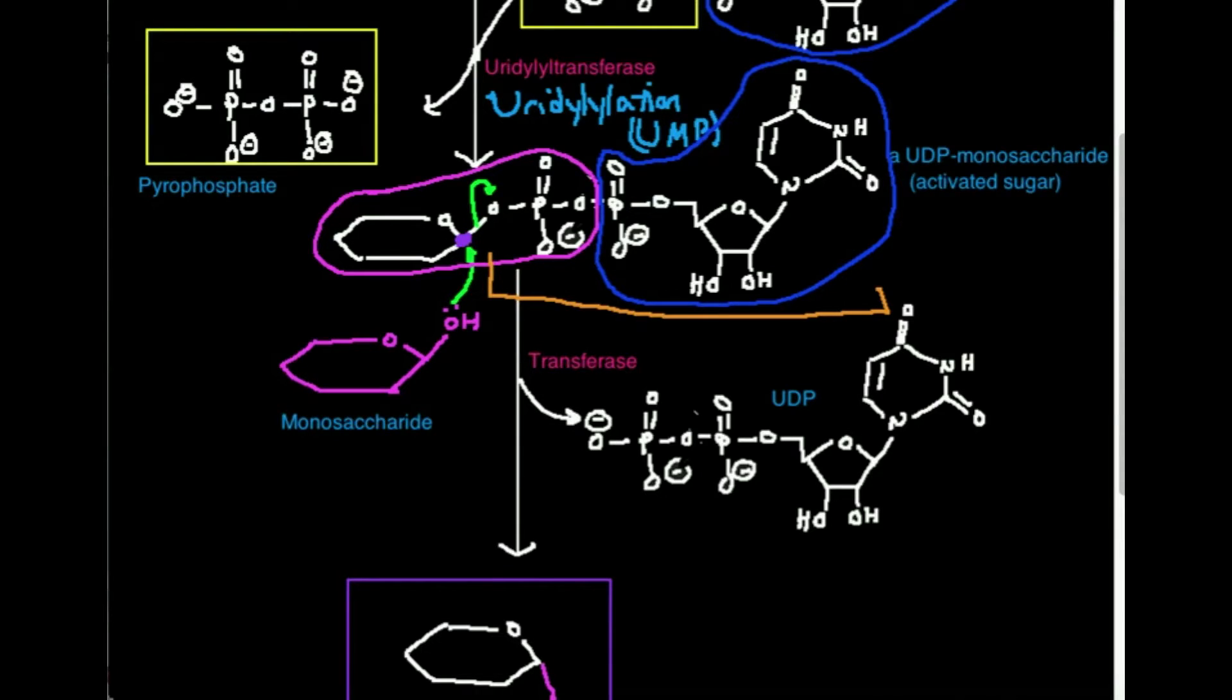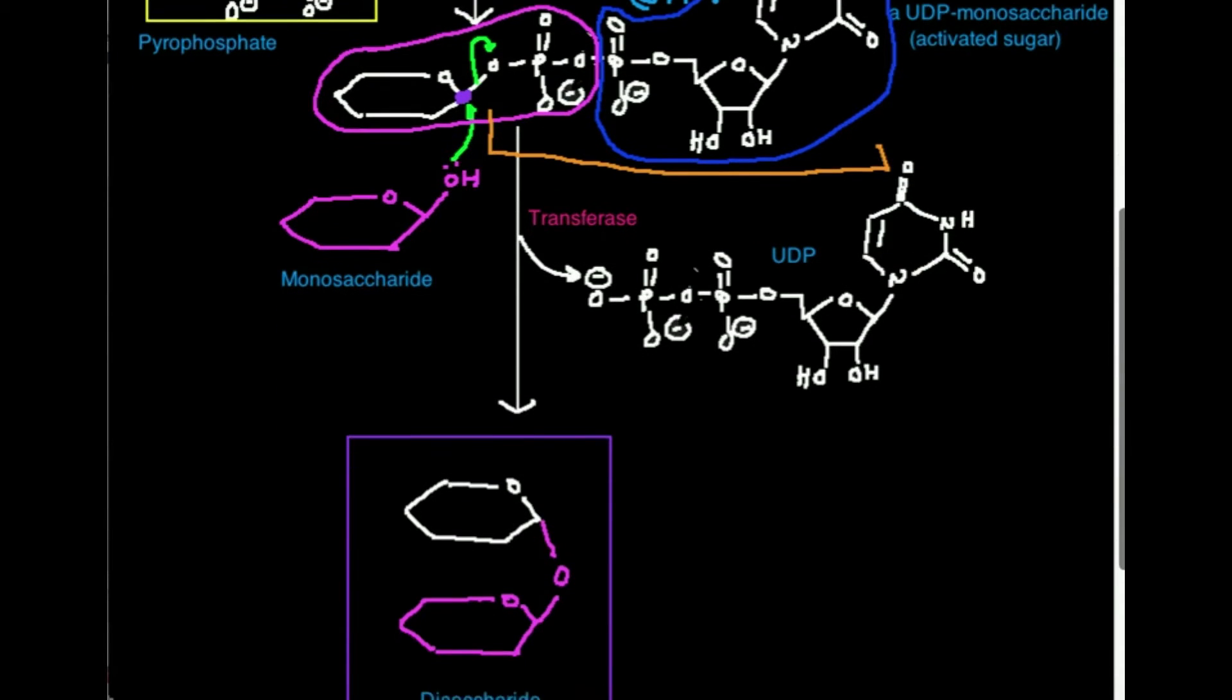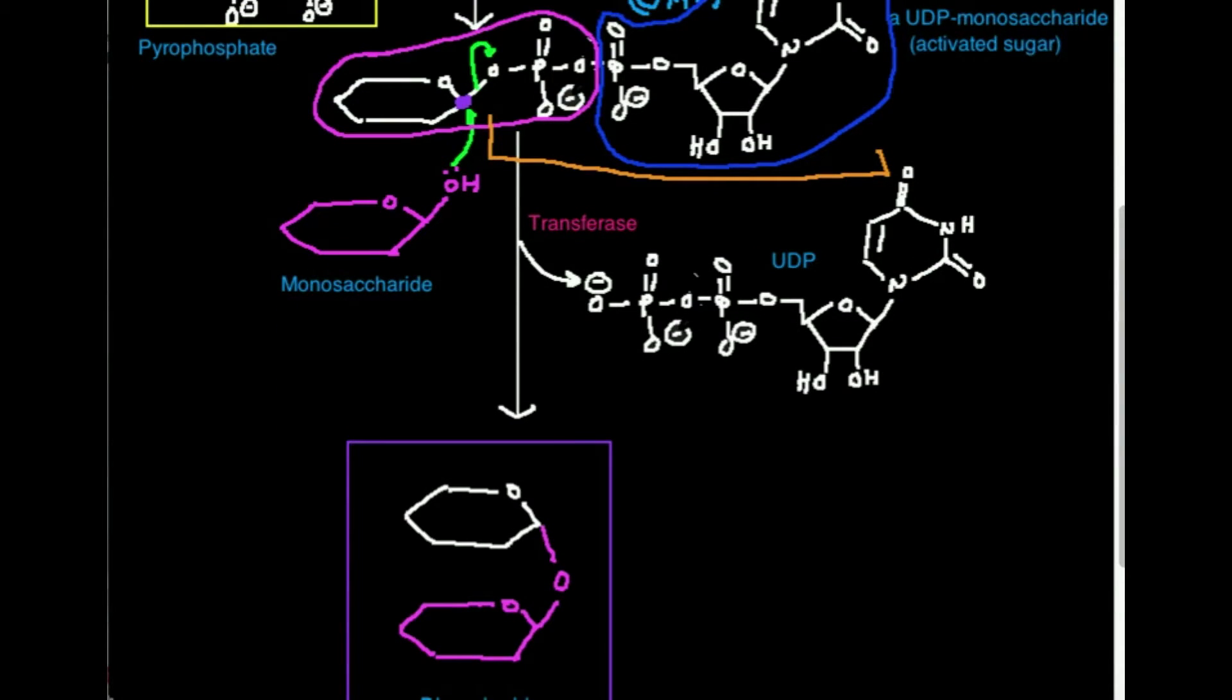UDP. So UDP is my fantastic leaving group. And so ultimately, when this OH attacks this carbon, this is my product. The white carbohydrate that I started with is on top, and this pink carbohydrate with the oxygen is shown on the bottom.